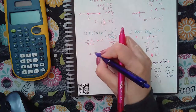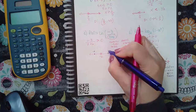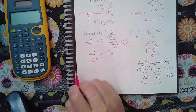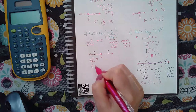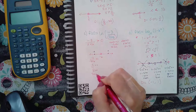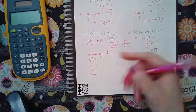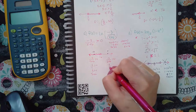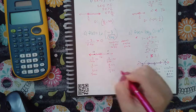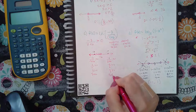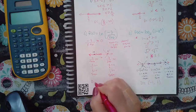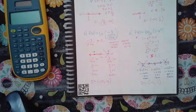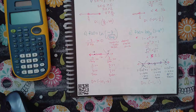Now test points on each side of negative six. To the left I'll use negative seven: negative three over (−7 + 6) = negative three over negative one = positive three, which is greater than zero — true. To the right I'll use zero: negative three over (0 + 6) = negative one-half, which is not greater than zero — false. So the domain is negative infinity to negative six with an open parenthesis.